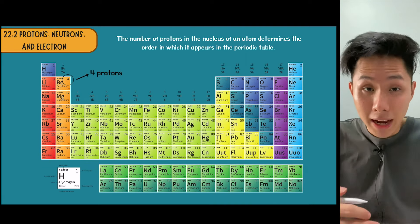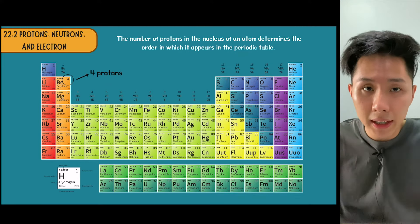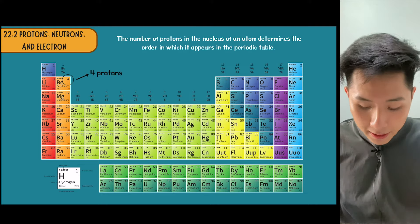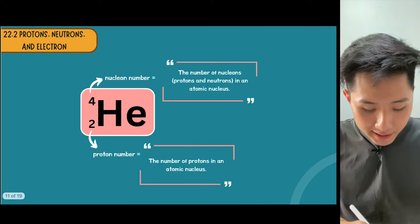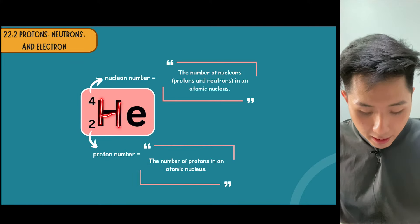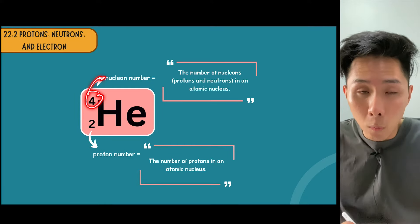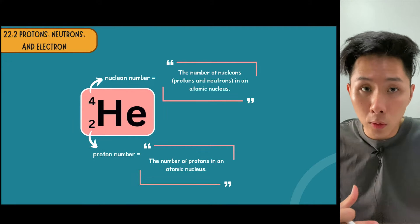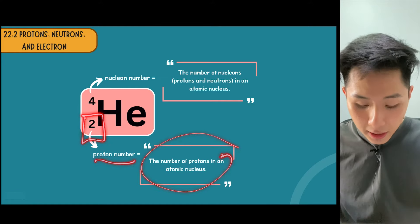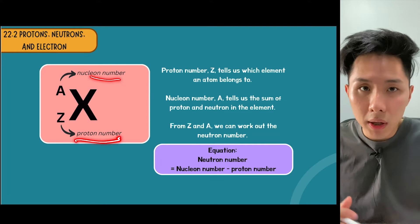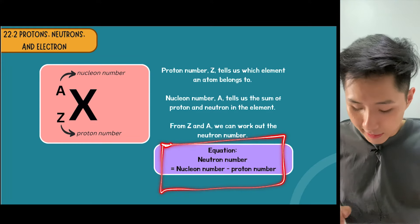What determines the particular element in the periodic table is the number of protons, and they are arranged in ascending order. This is a way to visualize an element - this is helium. The first number stands for nucleon number, which is the amount of protons plus neutrons. The second number stands for proton number. By using nucleon number and proton number, we can figure out how many neutrons by using the nucleon number minus the proton number.